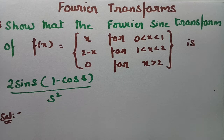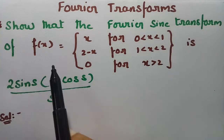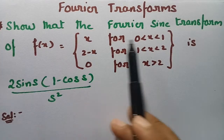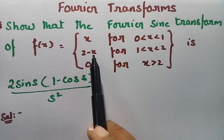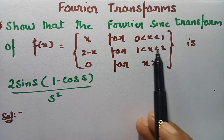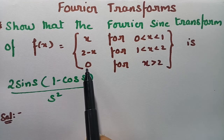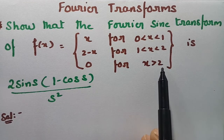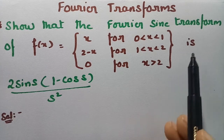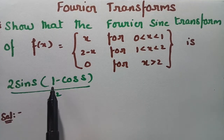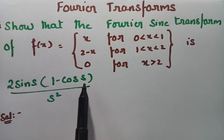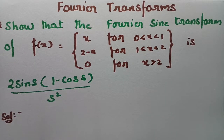Let's get started with a problem from Fourier transforms. We have to show that f(x) equals x if x lies between 0 to 1, and 2 minus x if x lies between 1 to 2, and 0 if x is greater than 2, is equal to 2 sin(s) times (1 minus cos(s)) divided by s squared.